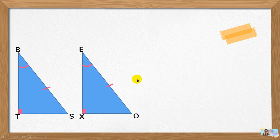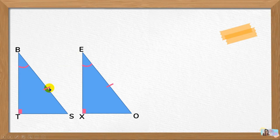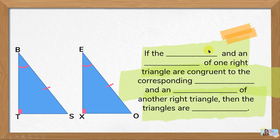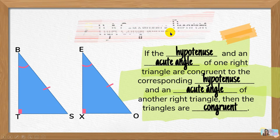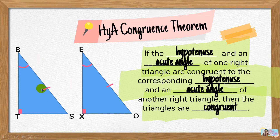Another congruence theorem: we have angle B and angle E which are congruent — they are the acute angles — and we also have the hypotenuse congruent. So the theorem states: if the hypotenuse and an acute angle of one right triangle are congruent to the corresponding hypotenuse and an acute angle of another triangle, then the triangles are congruent. This theorem is called the HYA congruence theorem.